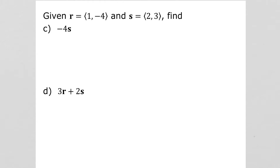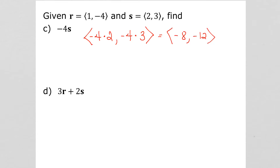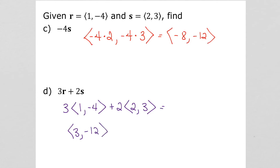For c, we want to find negative 4 times s. So we just basically take negative 4 times the x value of s, and negative 4 times the y value of s. That gives us negative 8, negative 12. And last, 3r plus 2s – we'll take 3 times r and add it to 2 times s. So that would be (3, -12) plus (4, 6). 3 plus 4 is 7, and negative 12 plus 6 is negative 6.